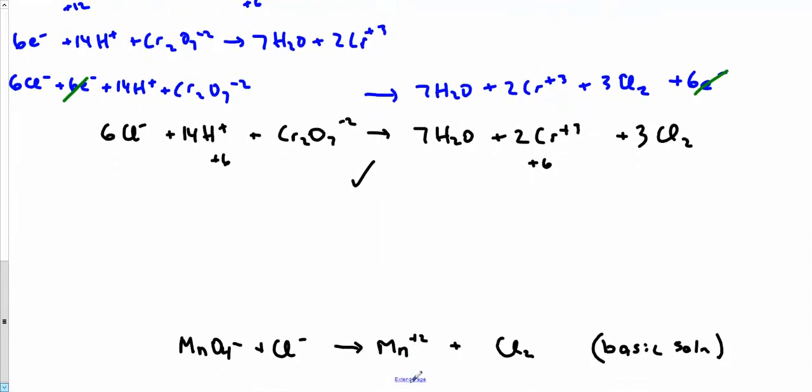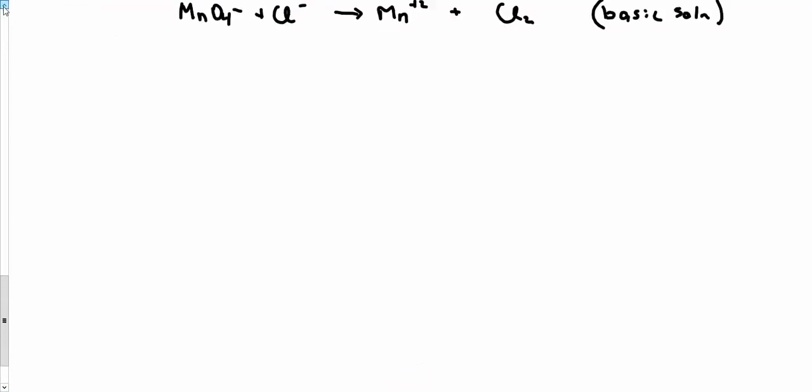Let's try this one. Now I'm not going to have the rules at the side, it'll give me a little bit more room to write. First thing, I break up this thing into its two half reactions. It looks like MnO4 is turning into Mn plus 2, it looks like Cl minus is turning into Cl2.